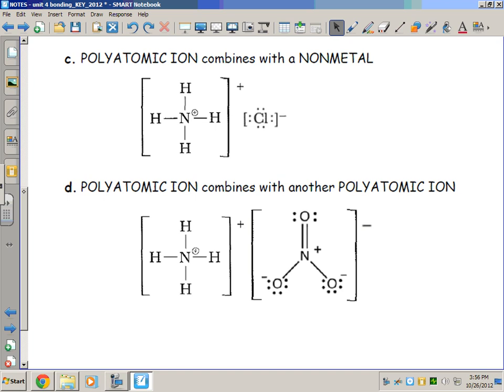The next scenario is when we take a polyatomic ion, in this case now it's positive, and combine it with a nonmetal which we've already said likes to become negative. Same idea: opposites attract and an ionic bond is formed. This is ammonium and this is chloride.